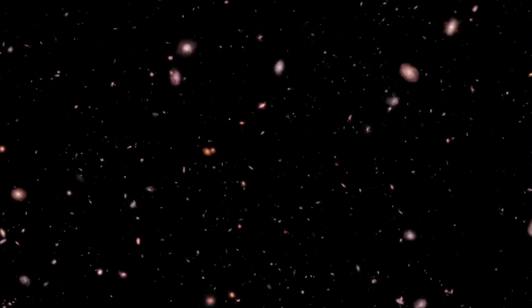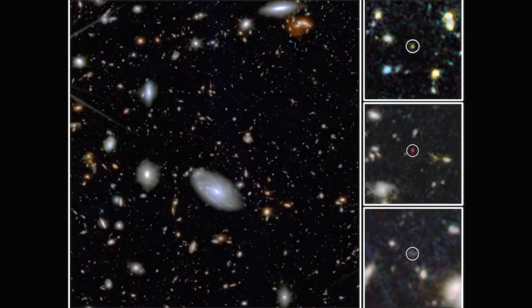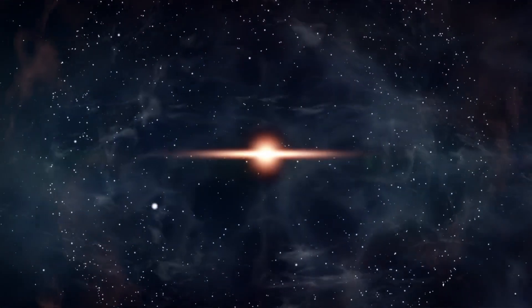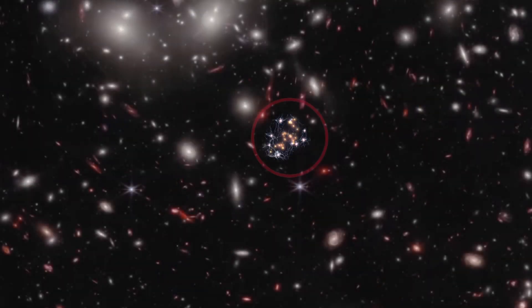Galaxies that shouldn't exist, structures that form too early, light that seems to come from before the Big Bang. At first, scientists thought it must be an error. Maybe the light was distorted, maybe the data was misread, but the more Webb looked, the stranger it became.